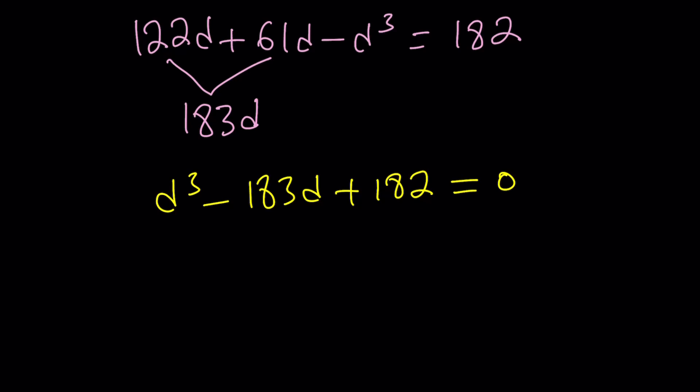That's going to give us d cubed minus 183d plus 182 equals 0. No way. You know this, right? Look at the sum of the coefficients. It's 0. 1 minus 183 plus 182 is equal to 0. Awesome. You know what that means? It means d equals 1 is a solution.